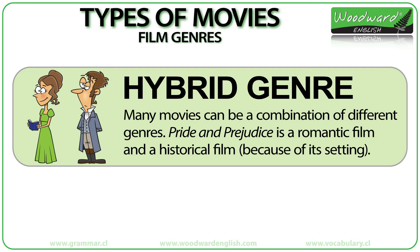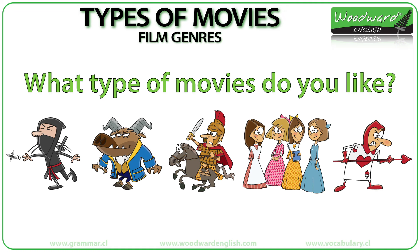Note: Many movies can be a combination of different types of genres. For example, Pride and Prejudice is a romantic film and a historical film because of its setting. What type of movies do you like? Let us know in the comments below.